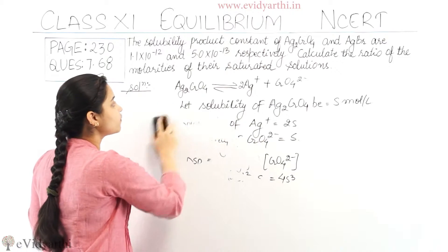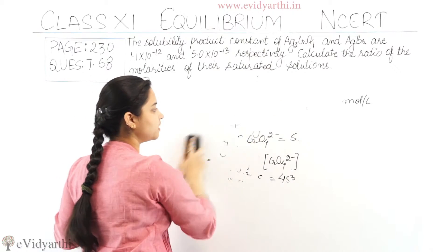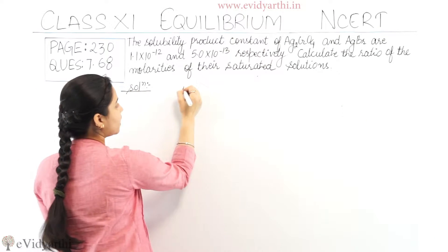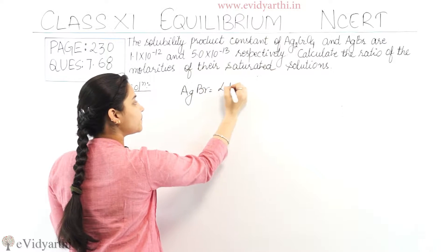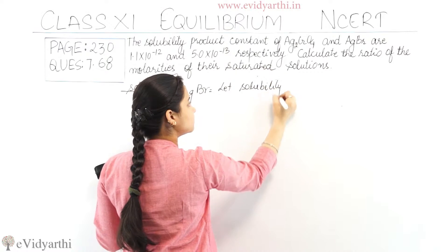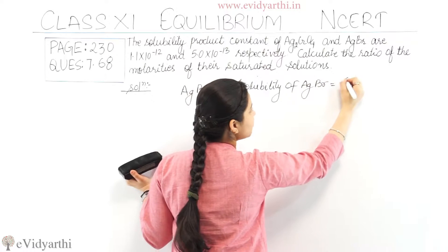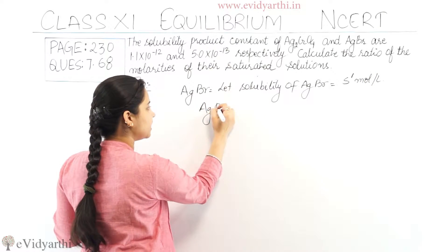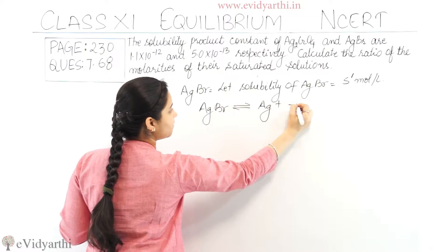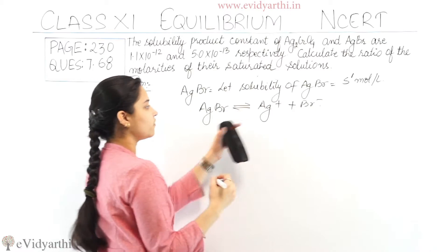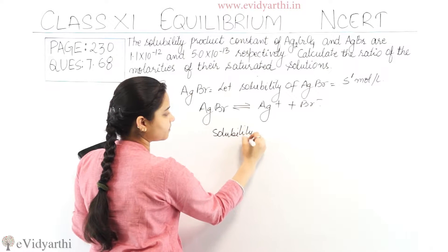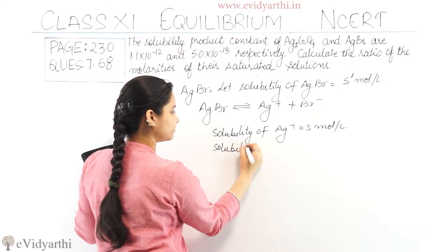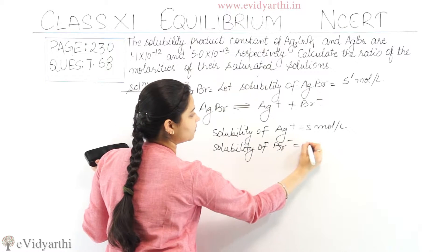Now I will be calculating the solubility of AgBr, that means silver bromide. After calculating its solubility, we will calculate the ratio of molarities of their saturated solutions. Let the solubility of AgBr equal S' mol per liter. AgBr gives Ag⁺ plus Br⁻, so the concentration of Ag⁺ is S' mol per liter and the concentration of Br⁻ is also S' mol per liter.